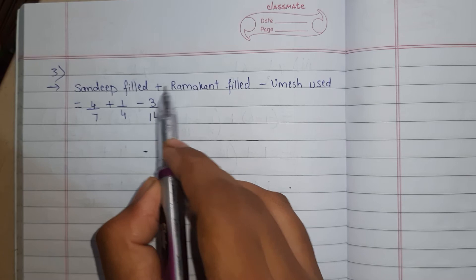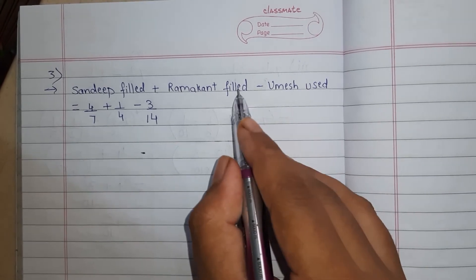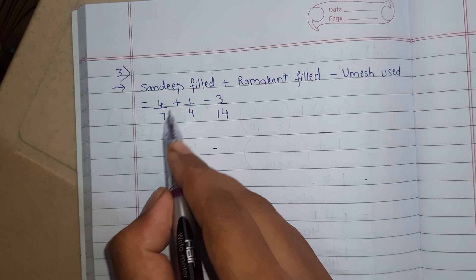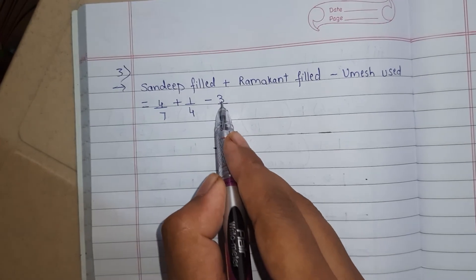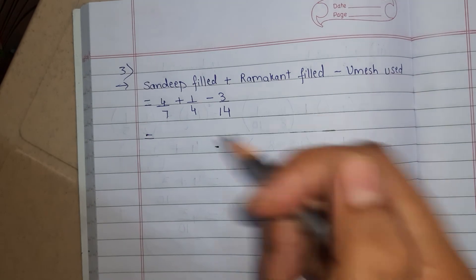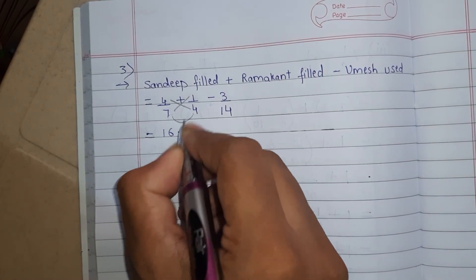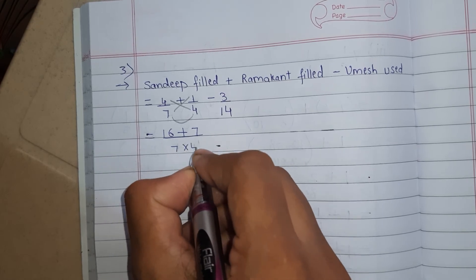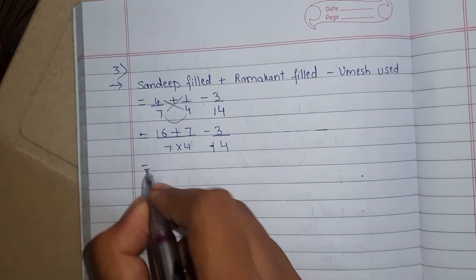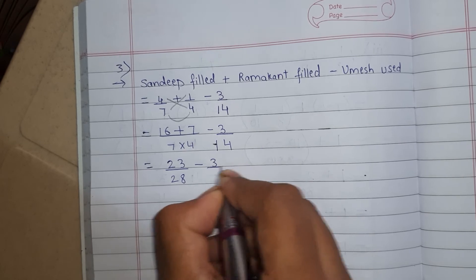Sandeep filled plus Ramakant also filled and minus Umesh used. Okay. Umesh ne jo paani use kiya woh less hoga. Isliye minus sign. Aur in dono ne paani fill kiya. Means plus sign. So 4/7 plus 1/4 minus 3/14. First we will solve addition and then we will do subtraction. For addition we have to do cross multiplication. This 2, this 2 and this 2. So 4 4s are 16 plus 7 ones are 7 upon 7 into 4. Minus 3/14 we will write as it is. Now 16 plus 7 how much? 23. 7 4s are 28. Minus 3/14.